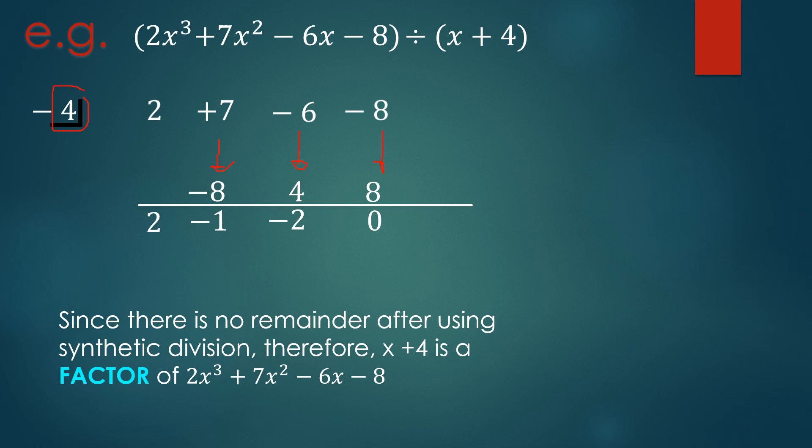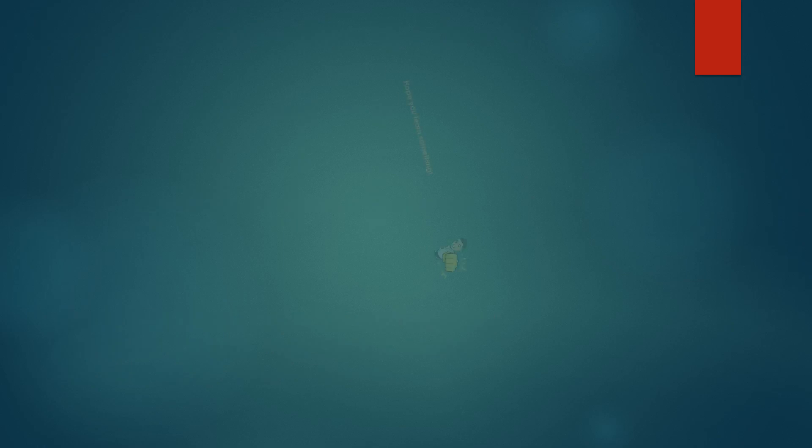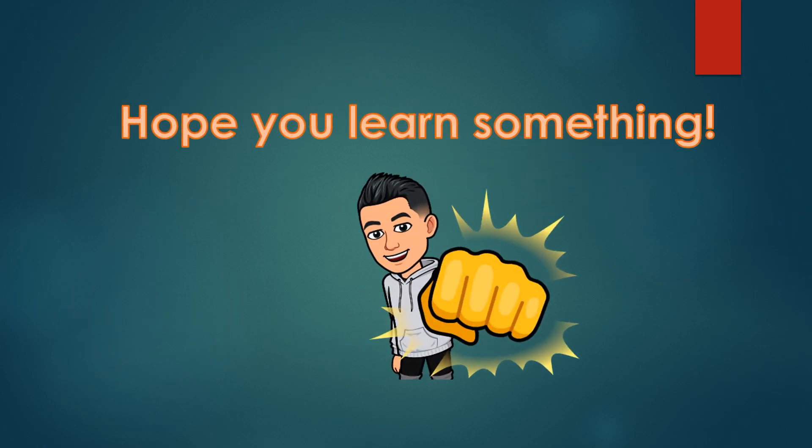You may also use synthetic division or long division to determine if a term is a factor — just remember that for a term to be a factor, there must be no remainder. The remainder theorem is used to find the remainder, while the factor theorem is used to determine if a term is a factor. Thank you for watching.